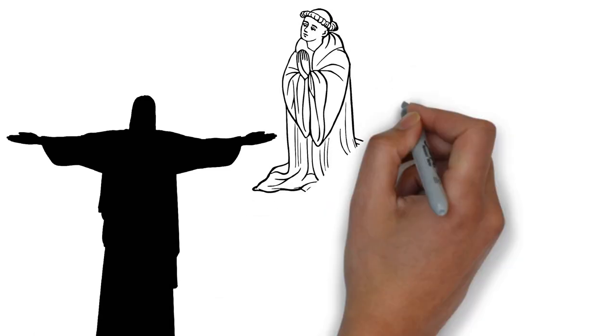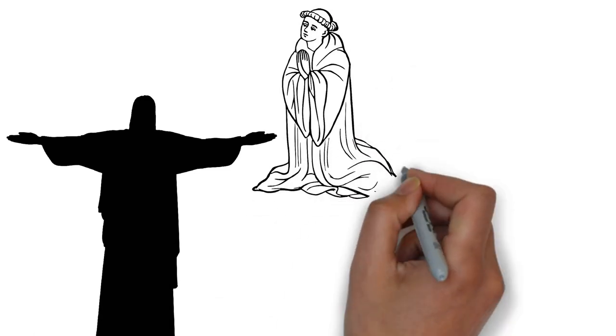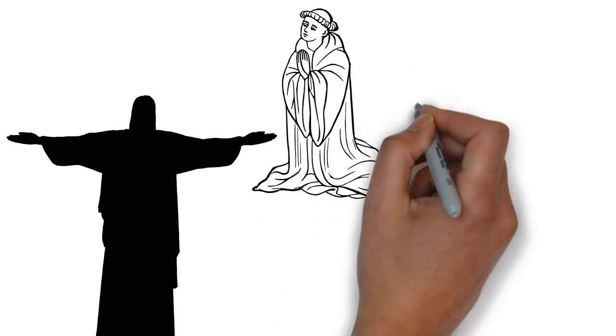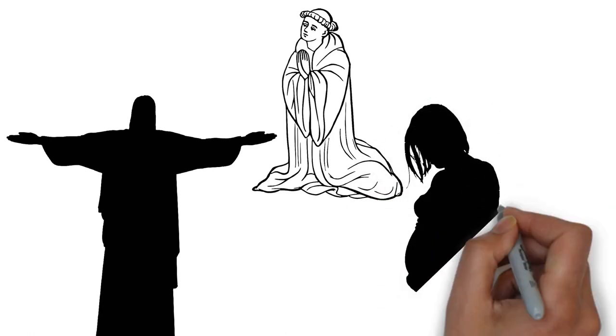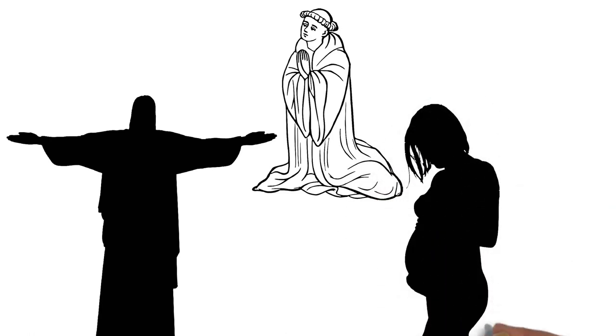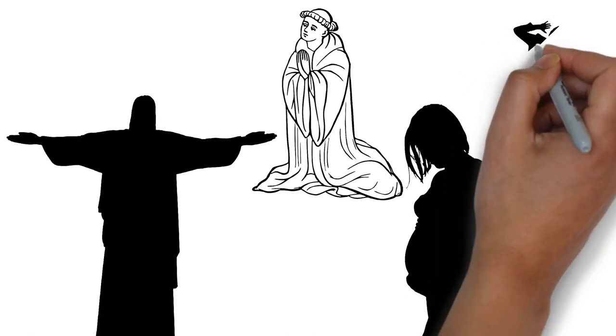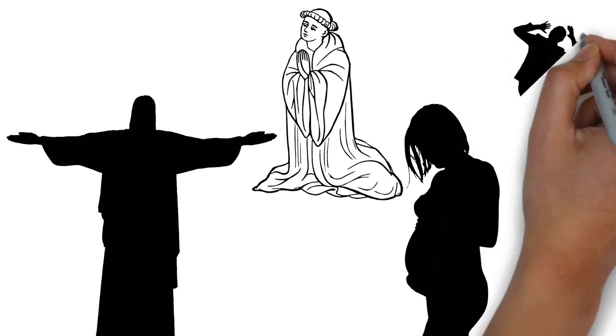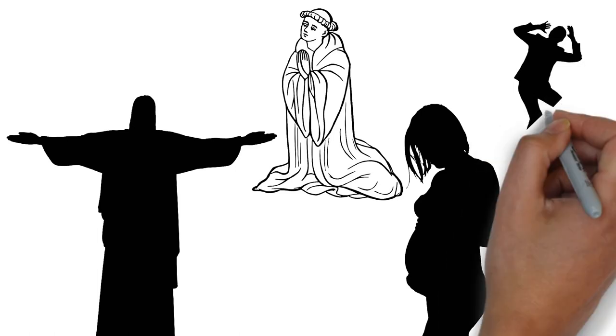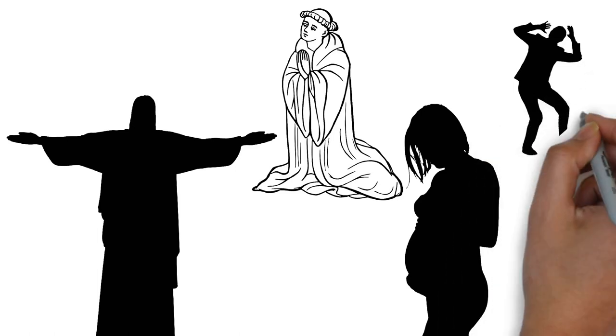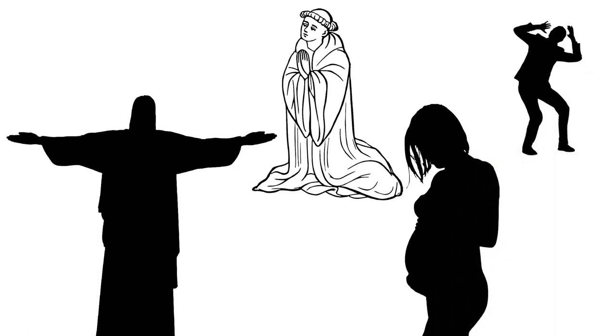Faust convinces her to allow him to give her mother a sleeping potion and they consummate their relationship, and she ends up pregnant. When she hears about another girl that became pregnant and had to kill her baby and live as an outcast, she fears the same will happen to her. Gretchen prays to the Virgin Mary that the Lord will have mercy.